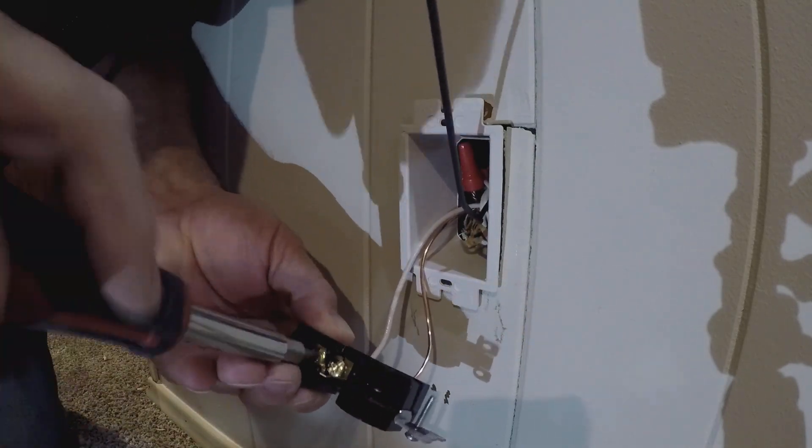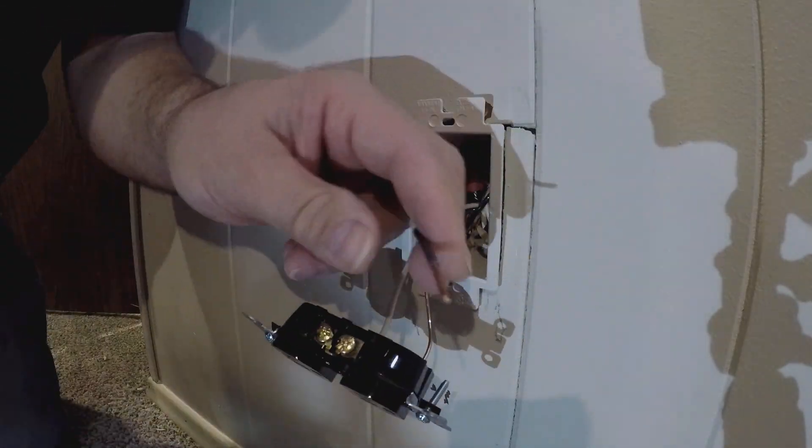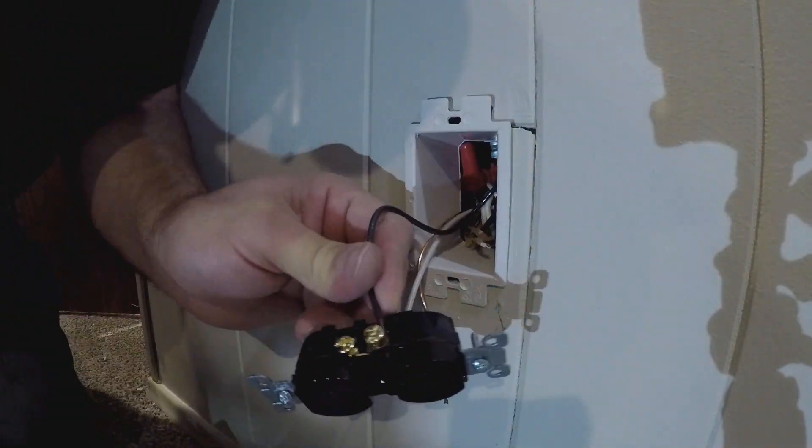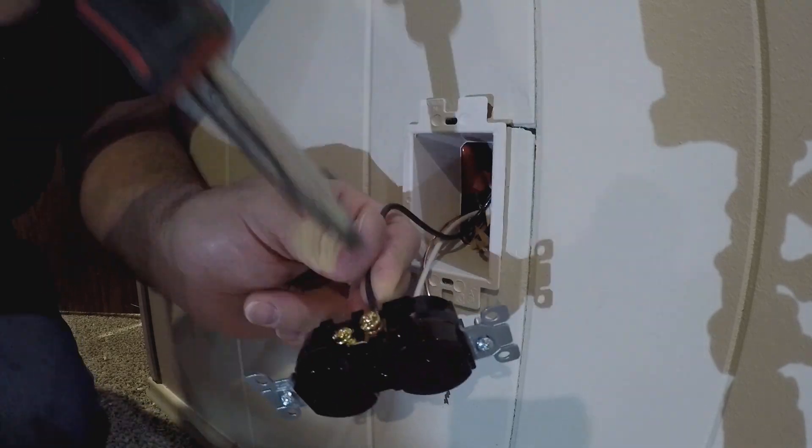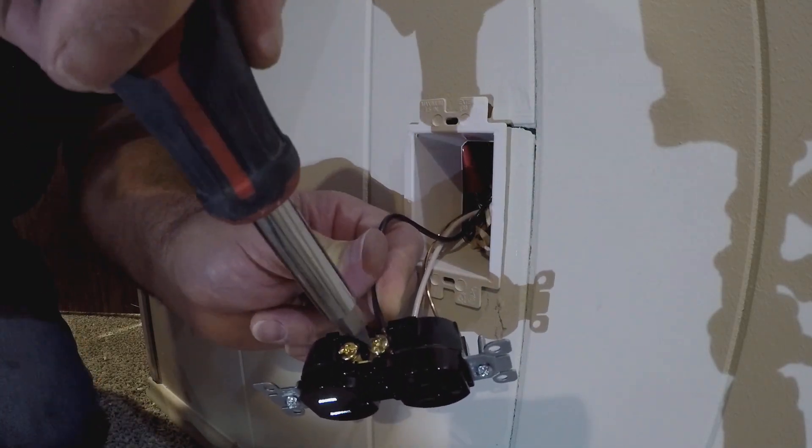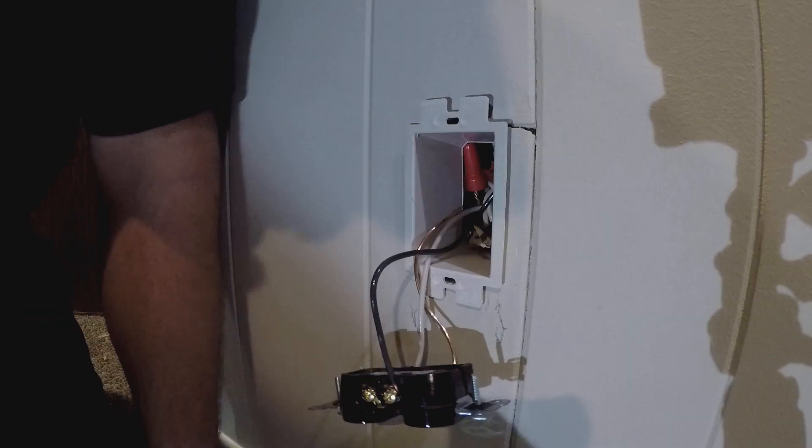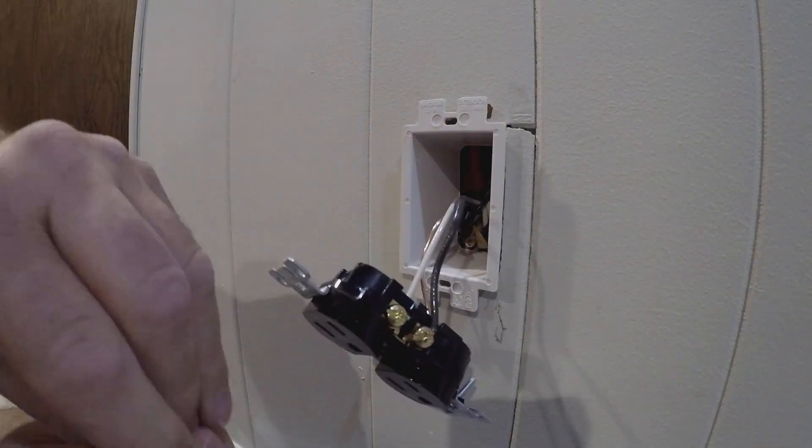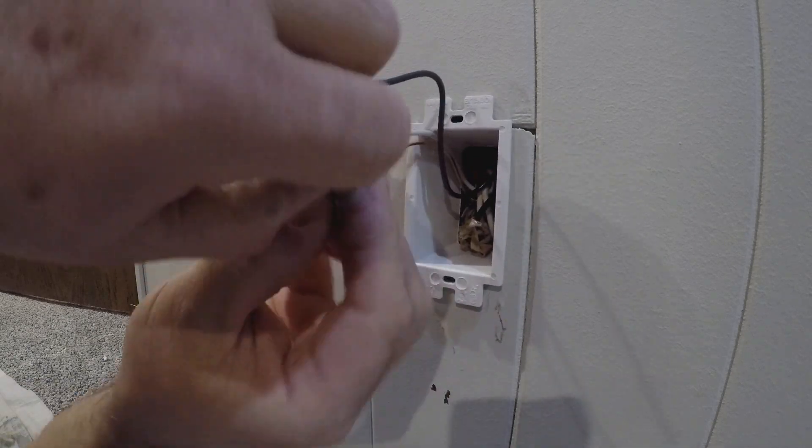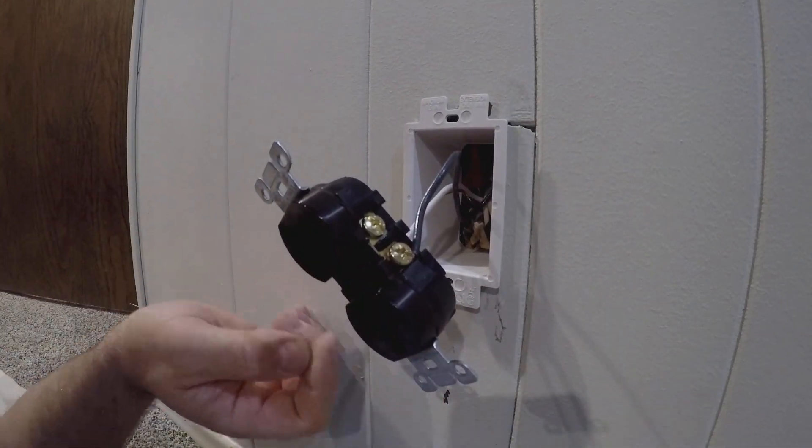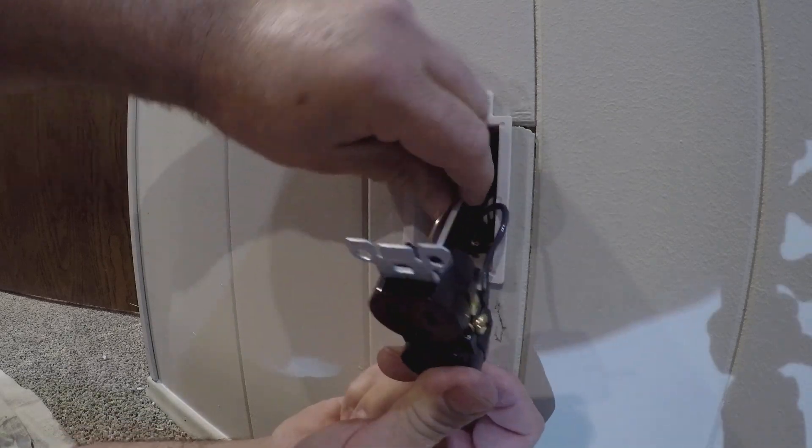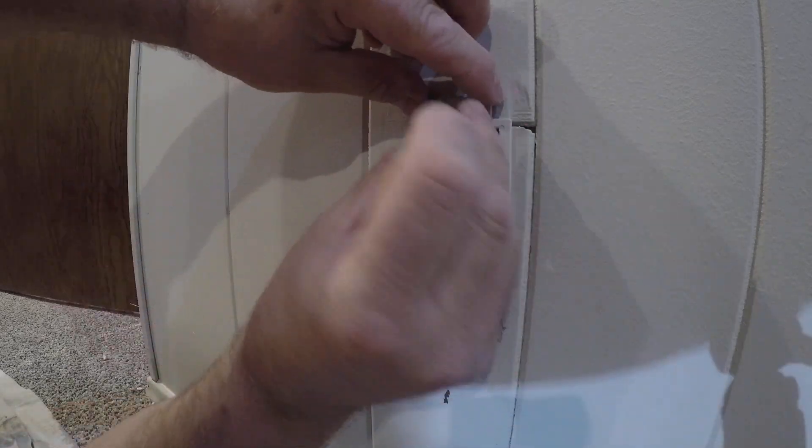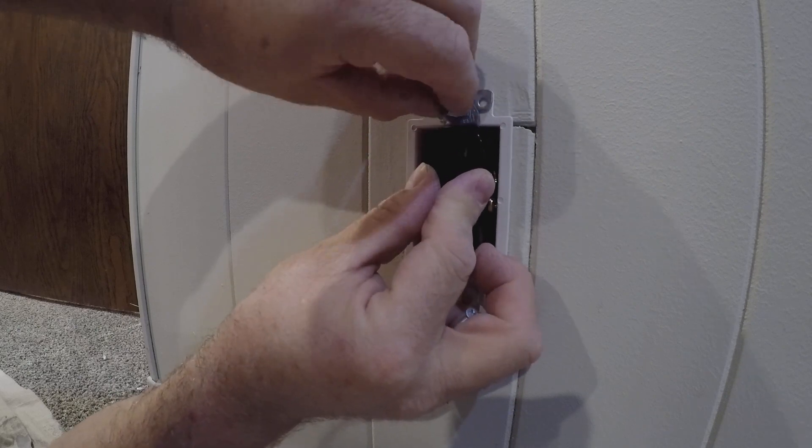So we stuffed that box extender in there and now we are stripping the wires, putting a loop on them, and tightening the screw down to the outlet. Now we're going to shove the outlet into the extender and we have these long new screws. First you got to remove the old screws from the outlet and here are the new long screws. So we put those in and stick those through the extender and it makes a nice clean new installation that is code.